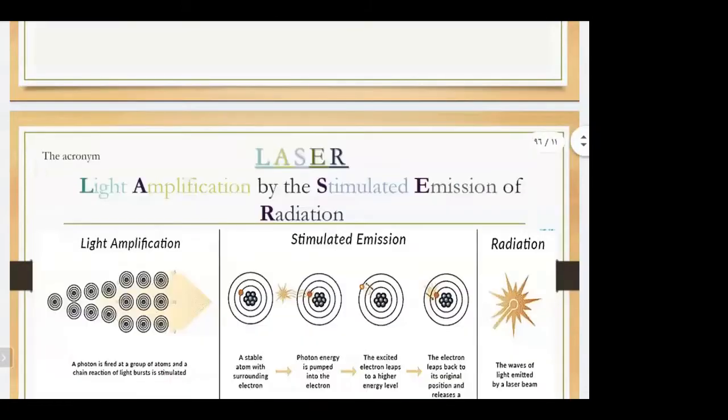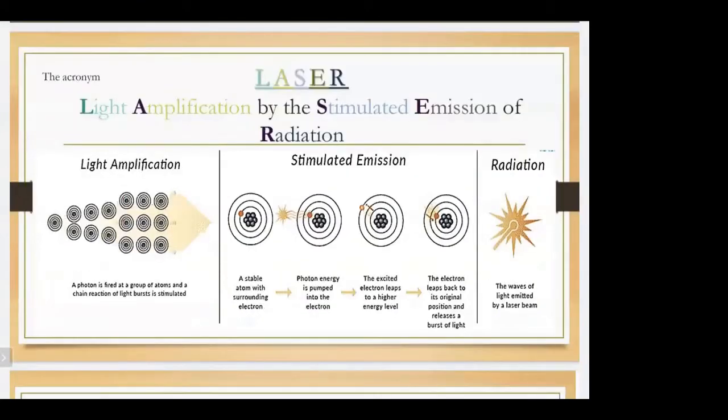As you can see here, a photon is fired at a group of atoms and the chain of reactions of light is stimulated. The photon energy will go to a stable atom with a surrounding electron. Then the photon energy is absorbed into that electron and that electron will be excited. The excited electron leaps to a higher energy level, then leaps back to its original position and releases the burst of light. Then the wave's light is emitted by laser.